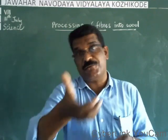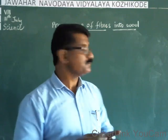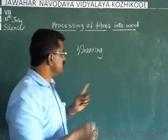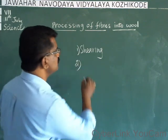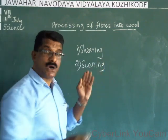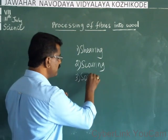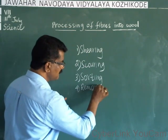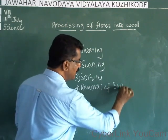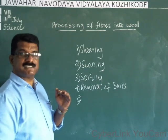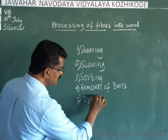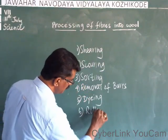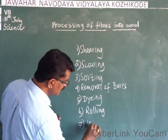First I will list out the different steps involved in the processing of wool. The first step is shearing. The next step is scouring. Then comes sorting. The fourth step is removal of burrs. Then comes dyeing.